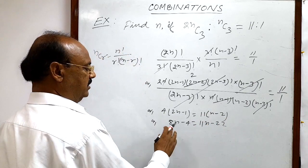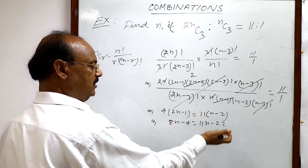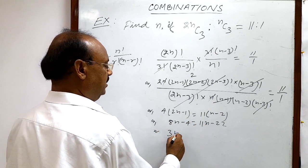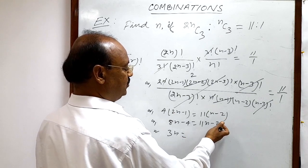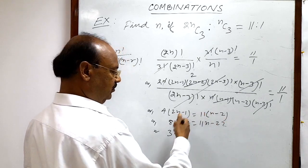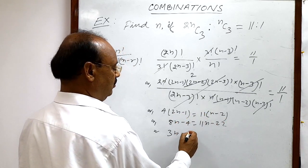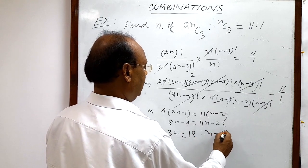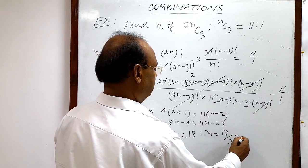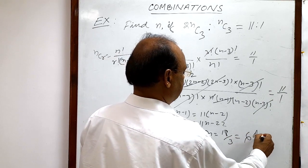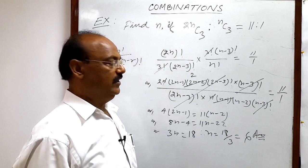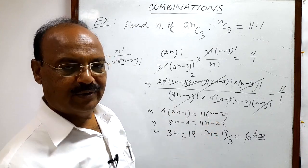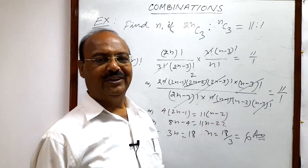By transposition, 11n minus 8n gives 3n, and 22 minus 4 gives 18. Therefore n is equal to 18 by 3, which is equal to 6. So this is the answer — very simple, very interesting. I hope you have got the solution. Thank you very much for watching this video, wish you all the best.